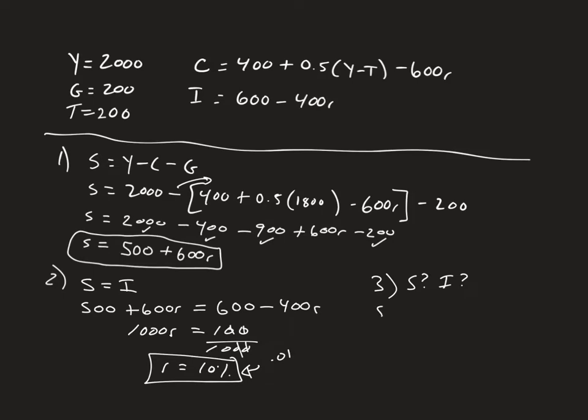So if we plug it into savings, it's 500 plus 600 times 0.1, which is just going to be 500 plus 60, which is going to equal 560. Let's go ahead and double check our work. This is just going to be 600 minus 400 times 10% or 0.1, which is 600 minus 40, which is equal to 560.